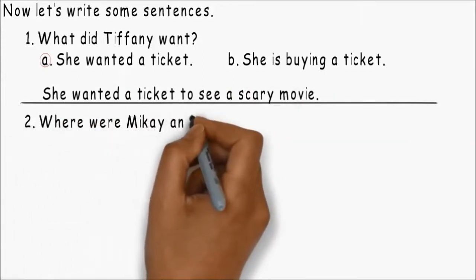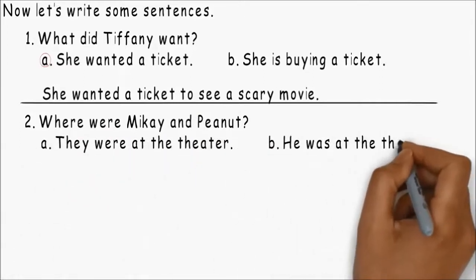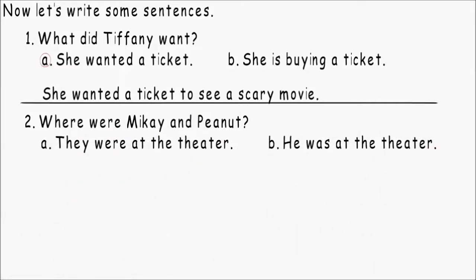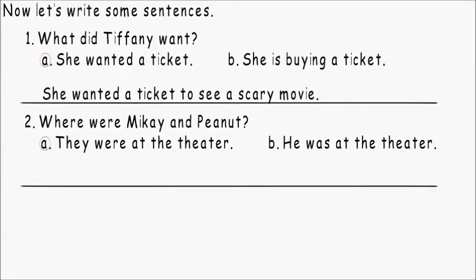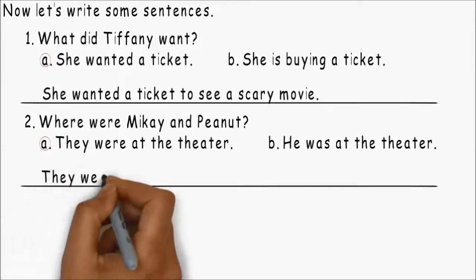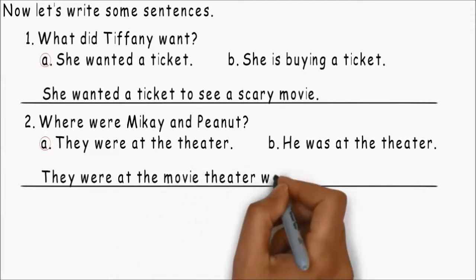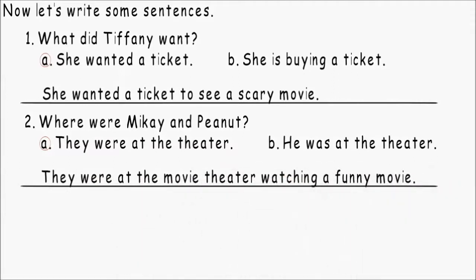Number two. Where were Mikai and Peanut? They were at the theater. Or he was at the theater. A, they were at the theater. So let's write a sentence. They were at the theater watching a funny movie.